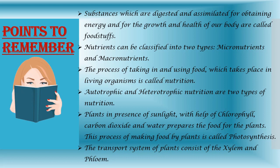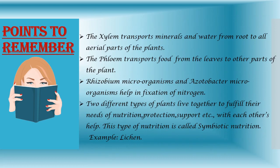Plants, in the presence of sunlight with the help of chlorophyll, carbon dioxide and water, prepare their food, and this process of making food by plants is called photosynthesis. The transport system of plants consists of the xylem and the phloem. The xylem transports minerals and water from the root to all aerial parts of the plants. The phloem transports food from the leaves to other parts of the plant.